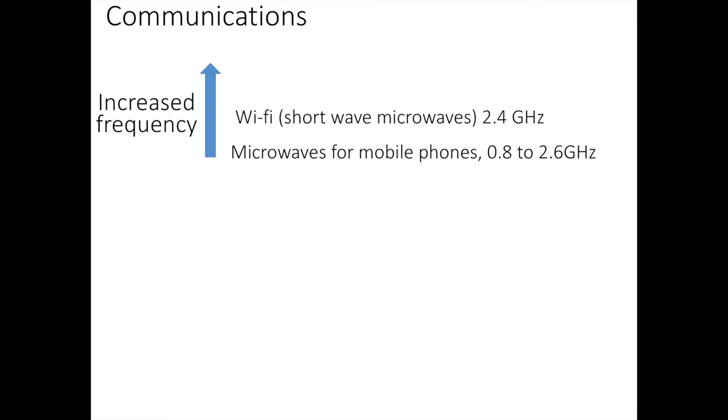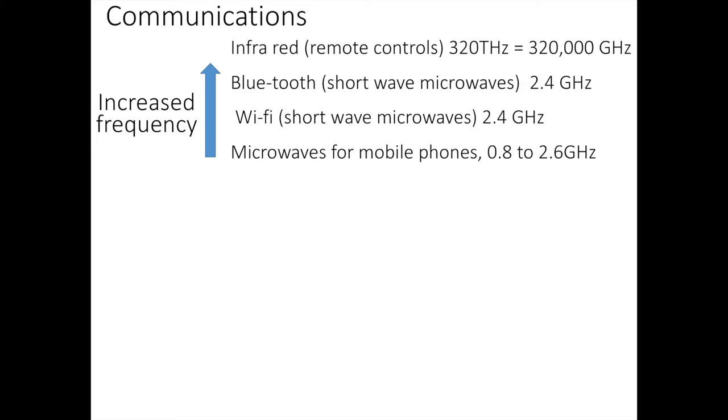Slightly higher frequency are Wi-Fi which also are microwaves but they are at 2.4 GHz as are Bluetooth which is again roughly 2.4 GHz. And finally much higher than any of them is infrared used for remote controls which is a whopping 320,000 GHz.